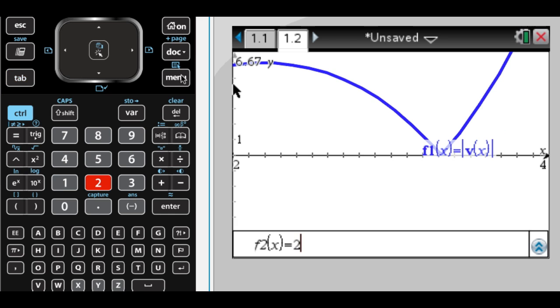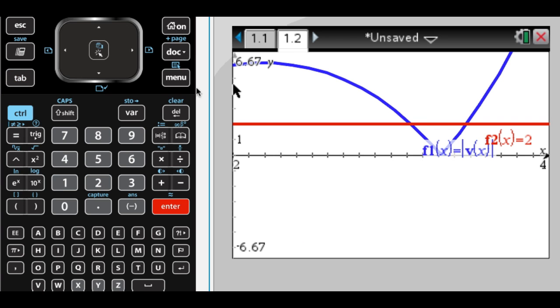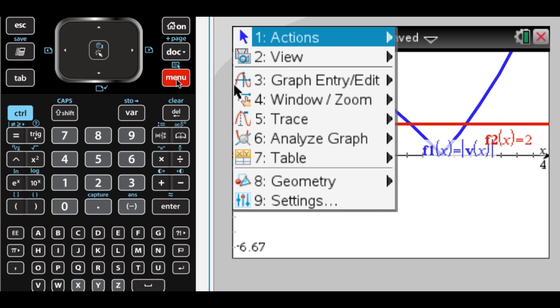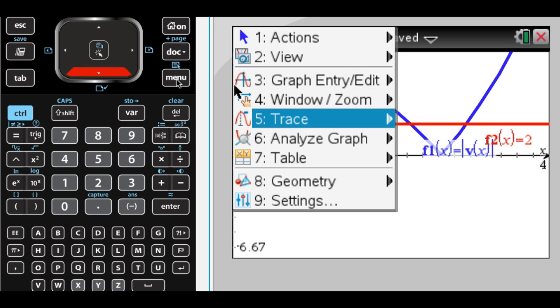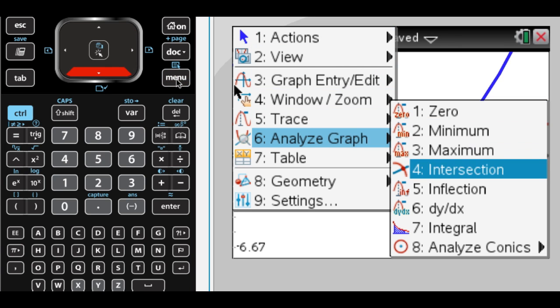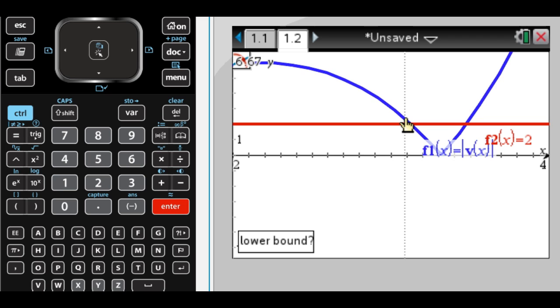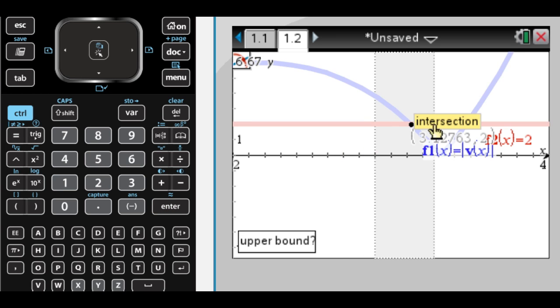And I'm going to add the line 2, because I'm looking for all the places where the speed is equal to 2. So analyze graph, find the intersection, lower bound.